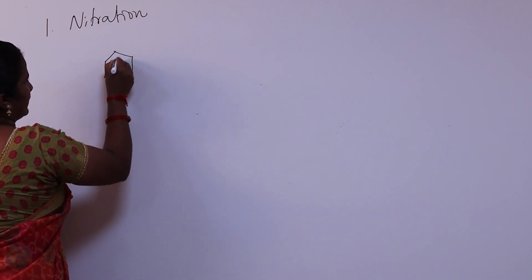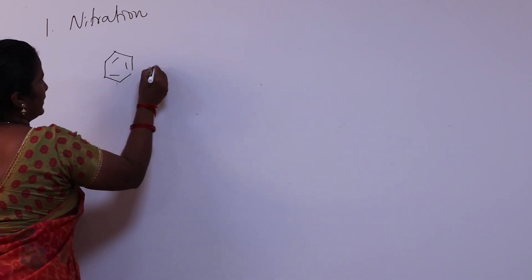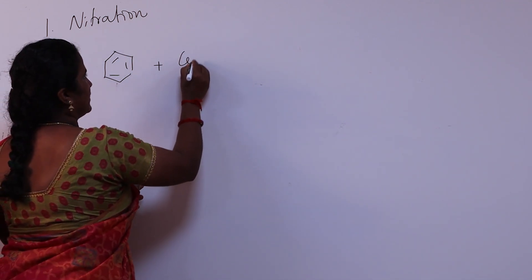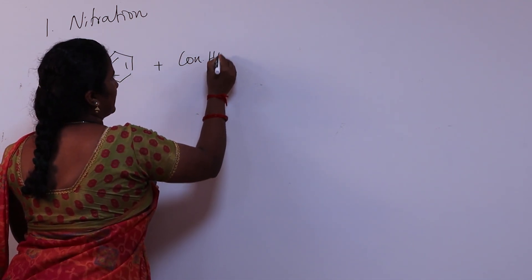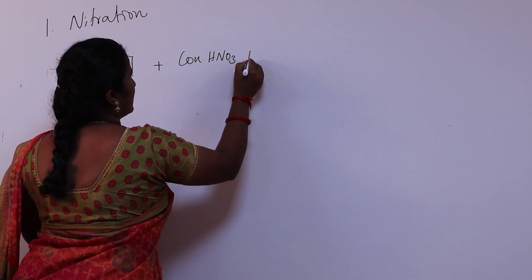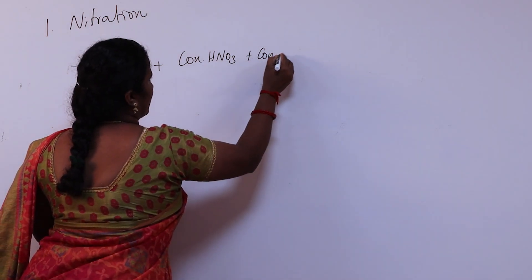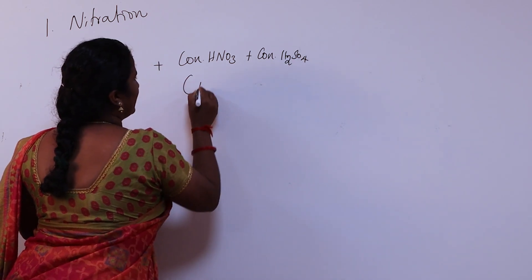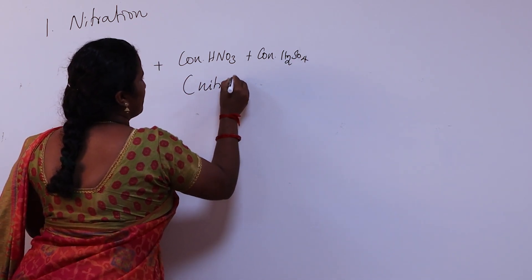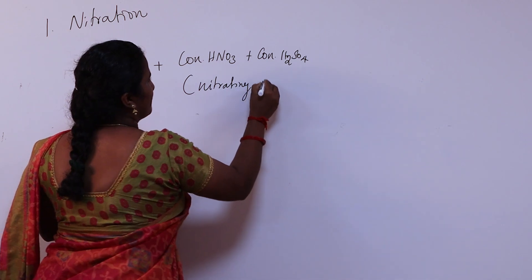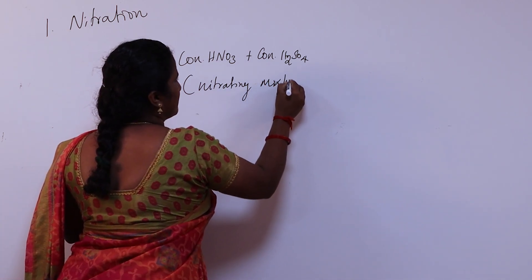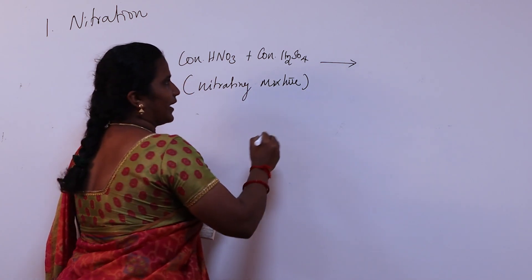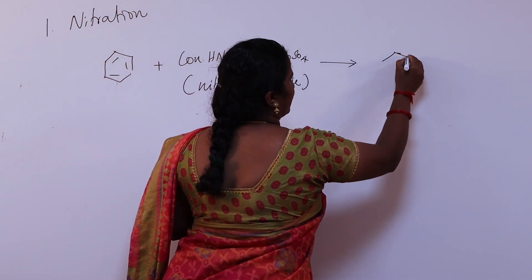In nitration, the benzene ring reacts with a nitrating mixture. The nitrating mixture is concentrated nitric acid (HNO3) and concentrated sulfuric acid (H2SO4). The product formed is nitrobenzene.